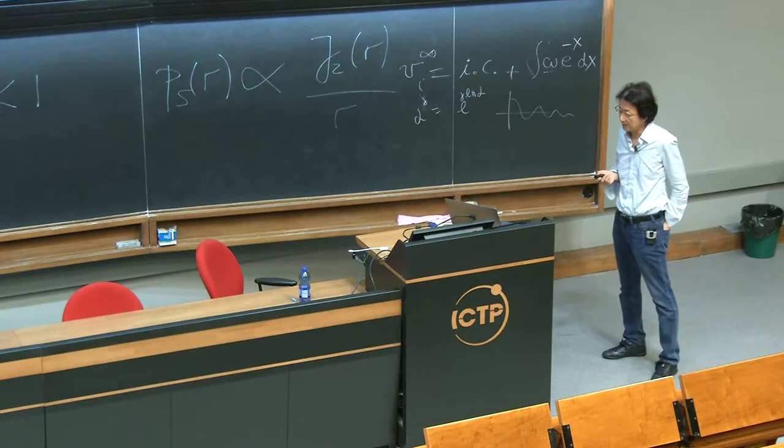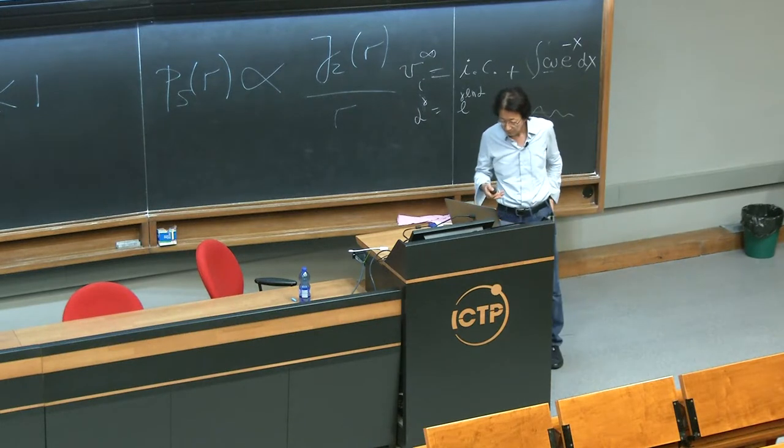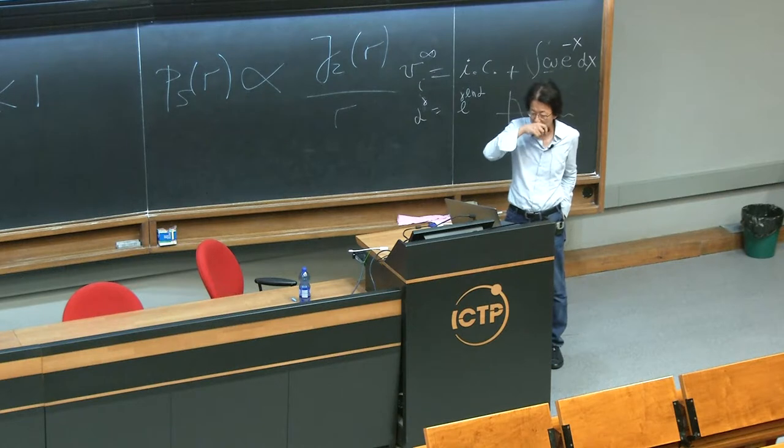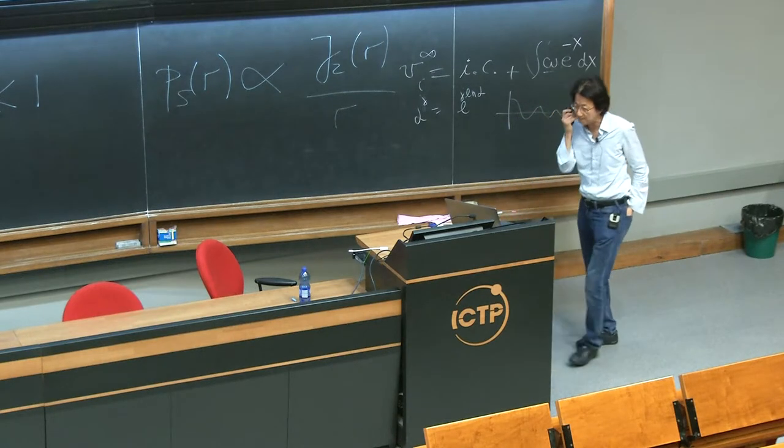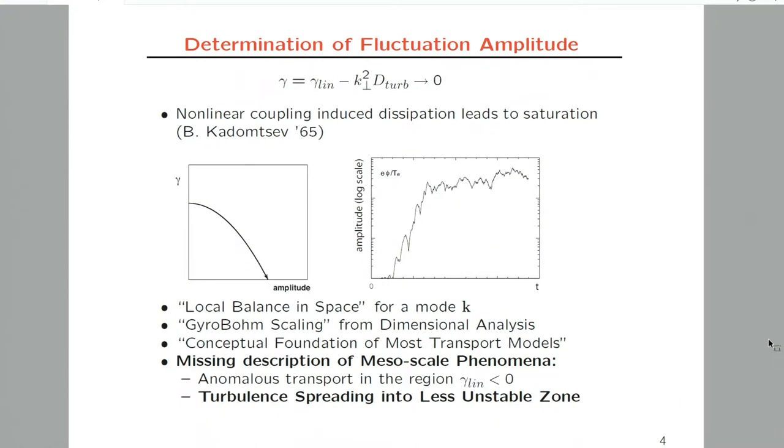Conceptually, the underlying physics is as follows, probably due to Boris Kadomtsev. If you plot the instantaneous growth rate gamma as a function of fluctuation amplitude, in linear theory the fluctuation amplitude is infinitesimally small and the linear growth rate is well defined. Typically for a specific mode k, the fluctuation will grow exponentially in time first, then slow down due to nonlinear interaction with other modes.